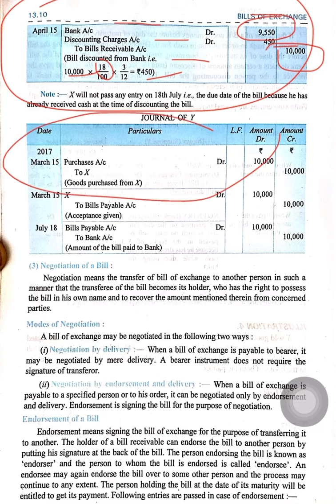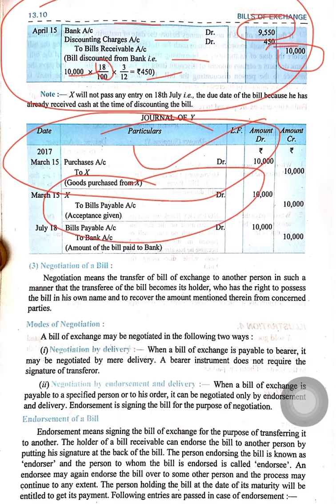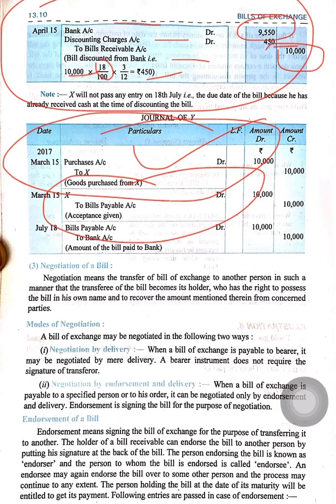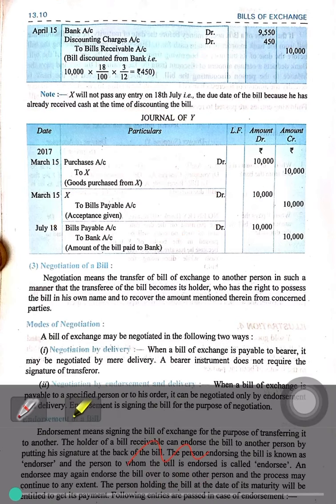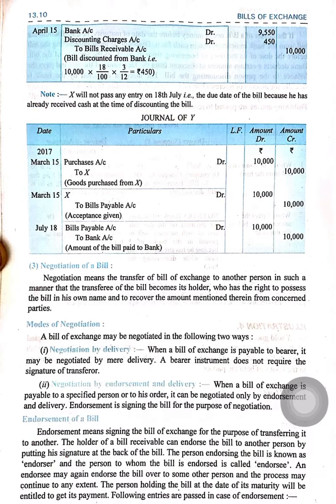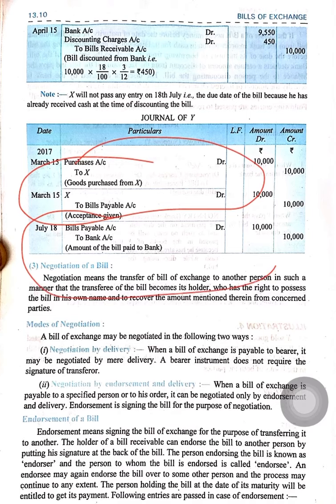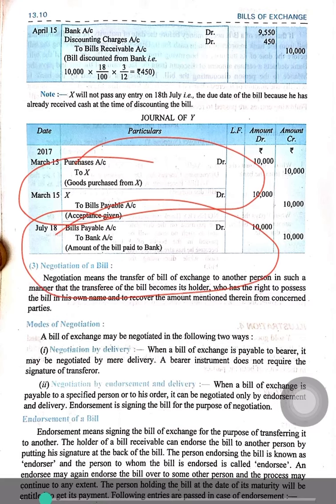Now for Y's section: first Y was purchasing goods, so entry will be Purchase Account debit to X. Then X wrote the bill of exchange, so entry will be X debit to Bills Payable. And when Y is paying the amount on due date: Bills Payable Account debit to Bank.